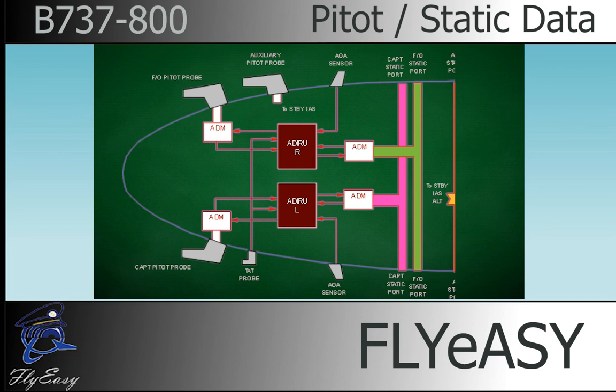The remaining auxiliary pitot tube provides airspeed signals to the standby airspeed indicator. The remaining left and right alternate static ports provide airspeed signals to the standby altimeter and the standby airspeed indicator.